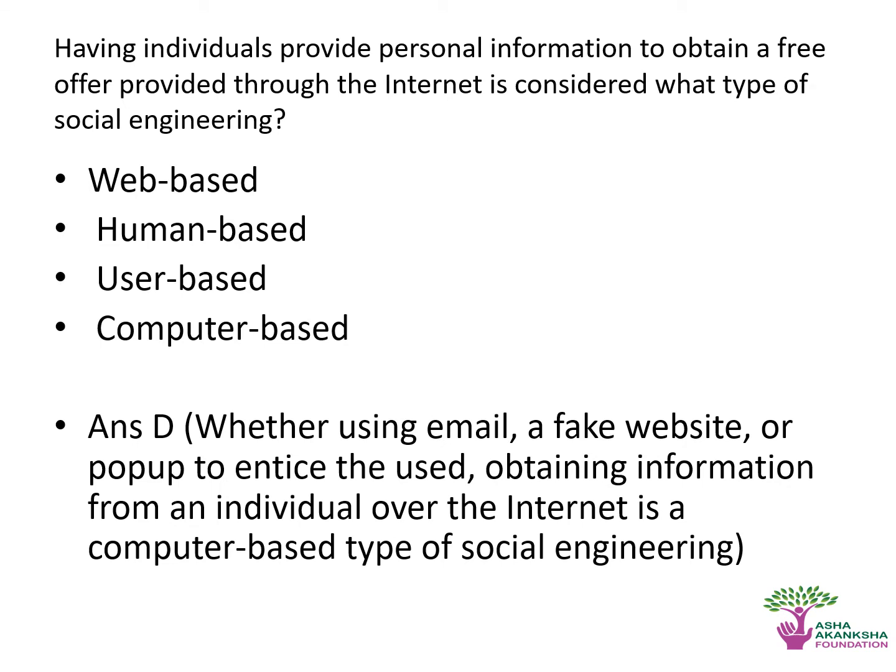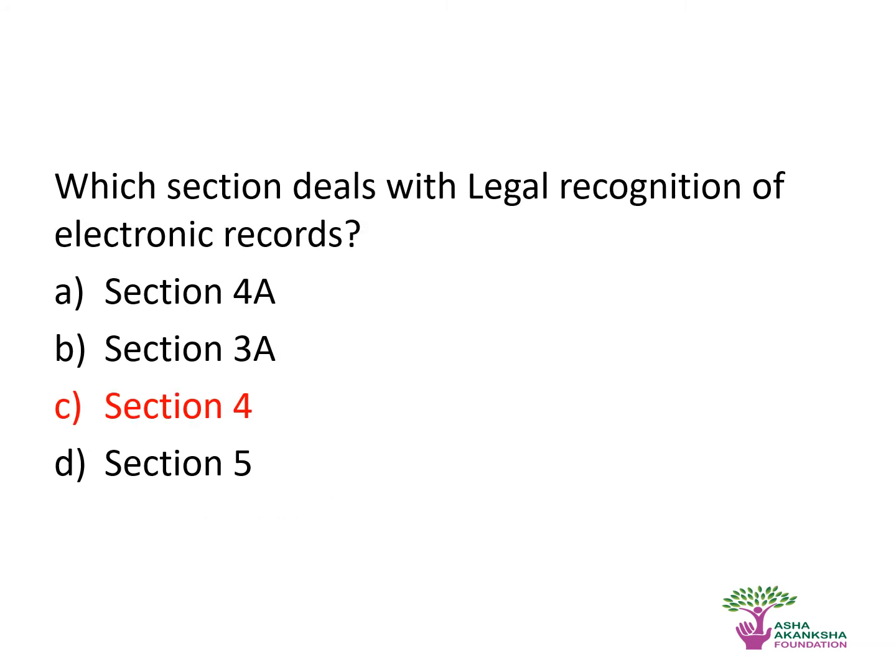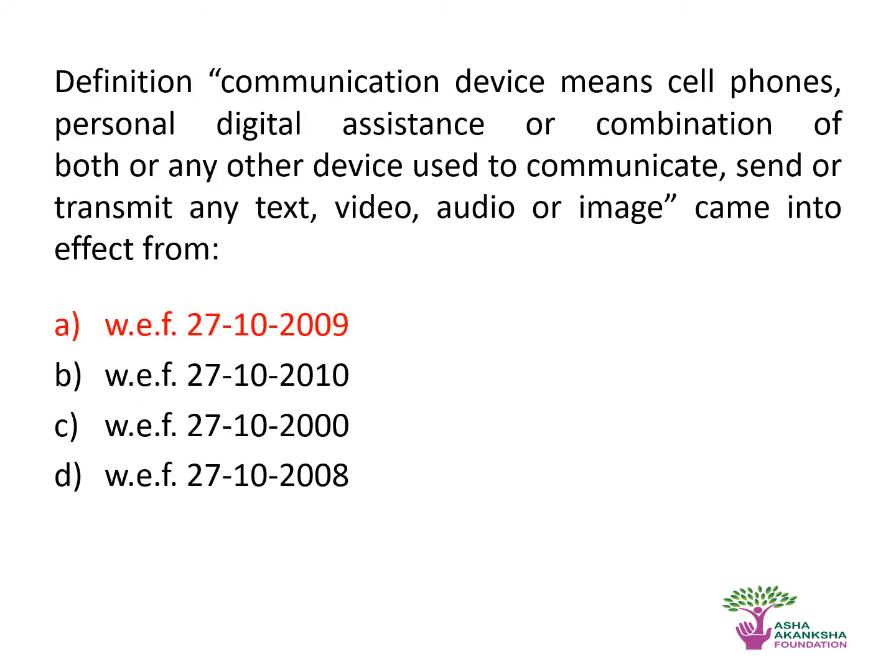Having an individual provide personal information to obtain a free offer provided through the internet is considered what type of social engineering? The correct answer is computer-based. Which of the following deals with the legal recognition of electronic records? The correct answer is Section 4.